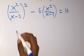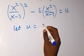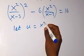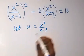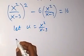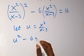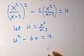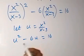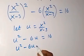Let u equal x² over (x - 3). This equation will now become u² minus 6u equals 16. Taking 16 to the left side, this becomes u² minus 6u minus 16 equals zero.